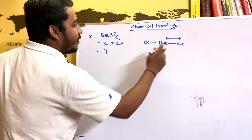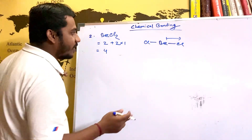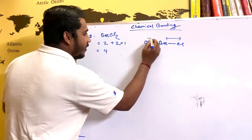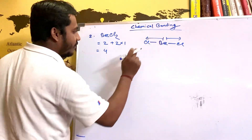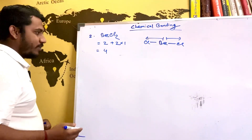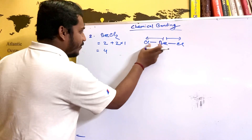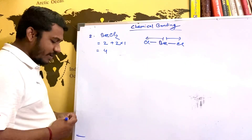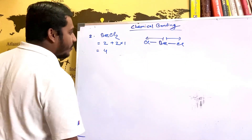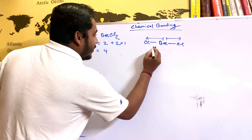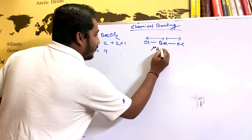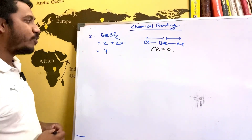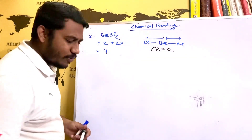Chlorine is the most electronegative element, so we can see a positive-to-negative dipole moment on one side, and similarly a positive-to-negative dipole moment on the other side. The two dipole moments cancel and nullify each other, so the resultant mu-r equals zero. The resultant dipole moment is zero, so BeCl2 is nonpolar.